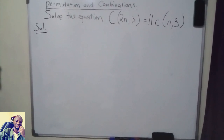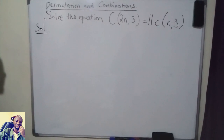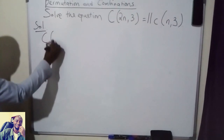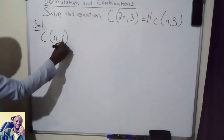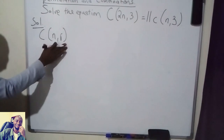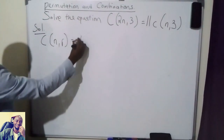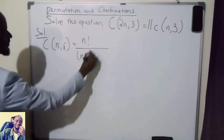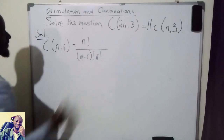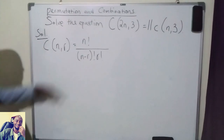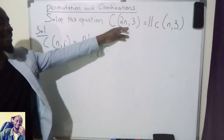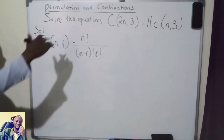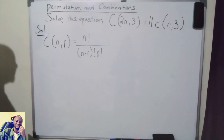A combination is defined using what we call the factorial notation. So if you are given a combination of n items taking r at a time, using factorial notation, this is equal to n factorial all over (n minus r) factorial times r factorial. So we need to identify which one is n and which one is r in the two parts of the given equation.